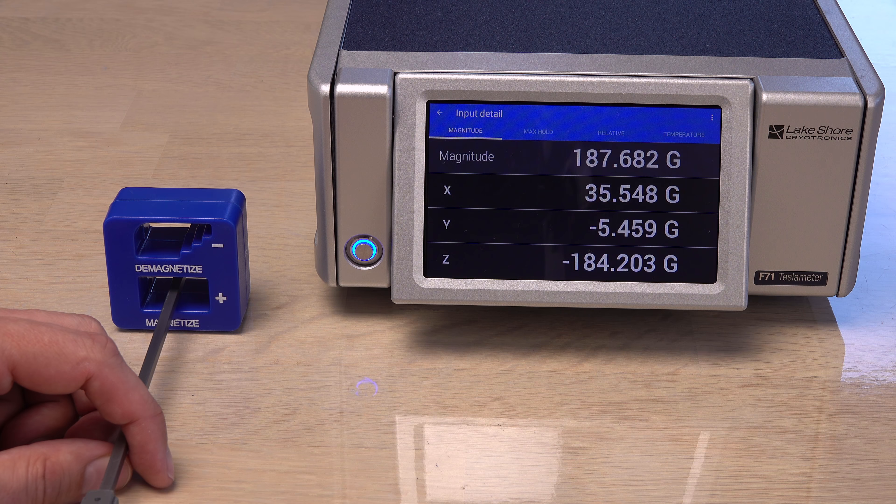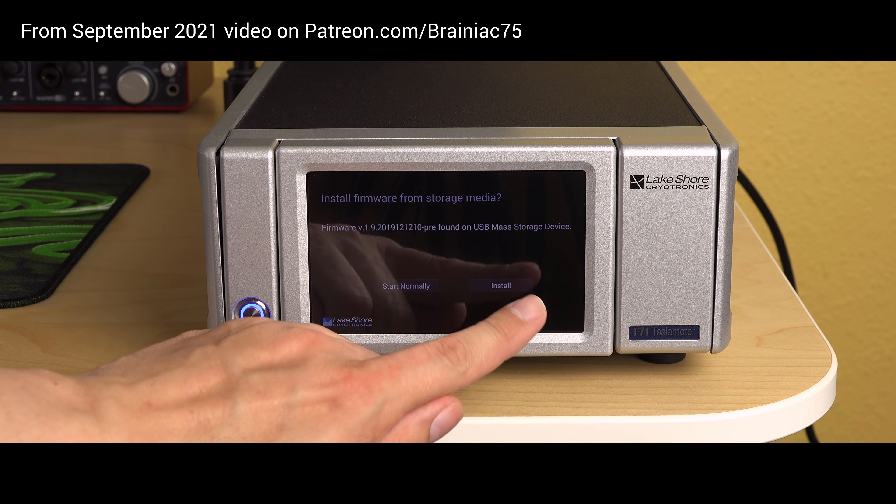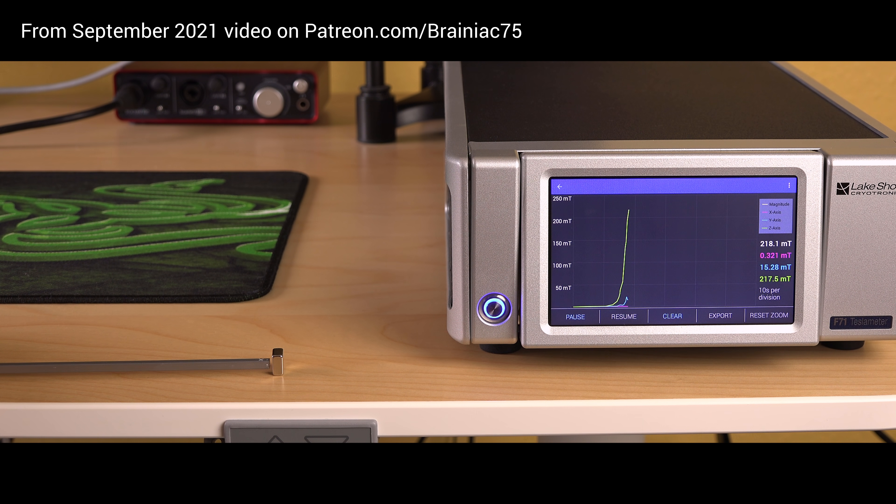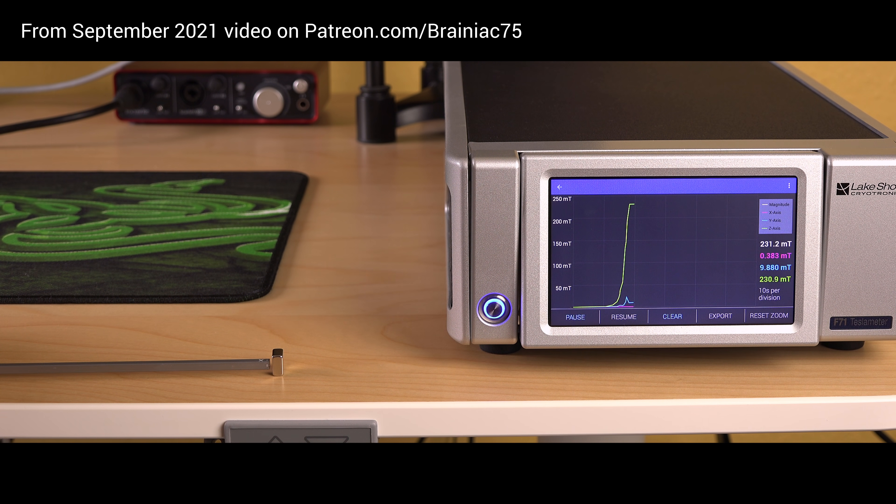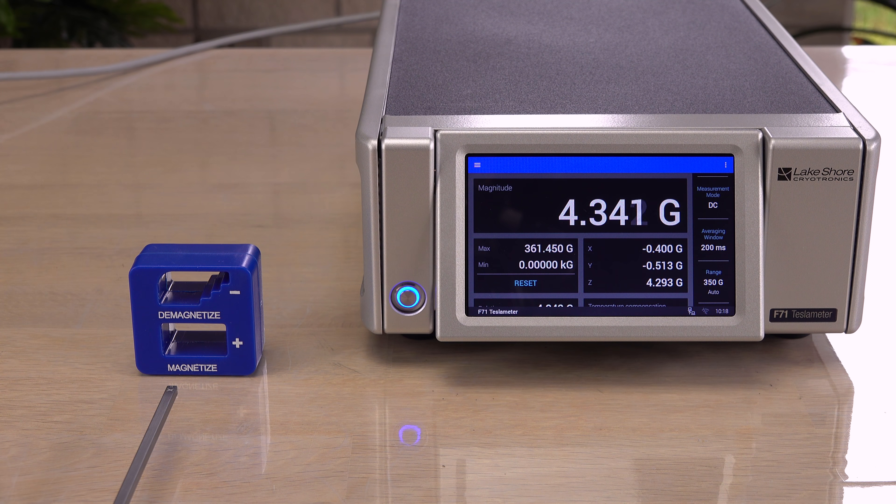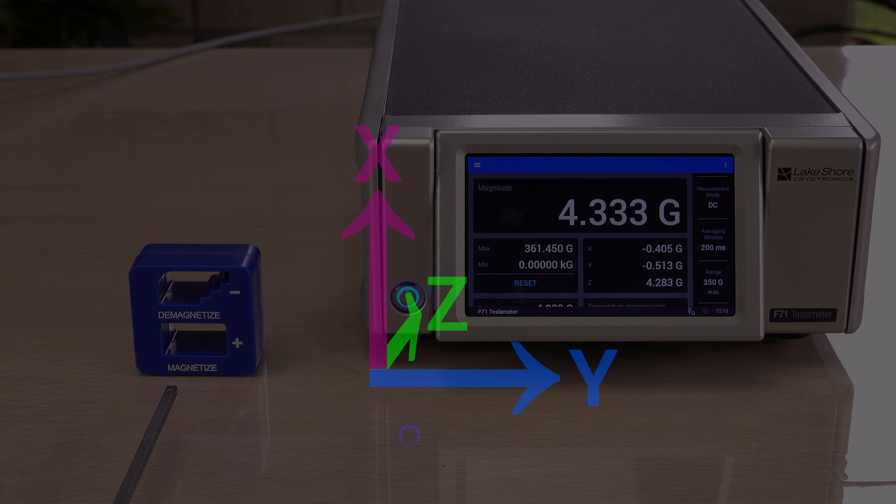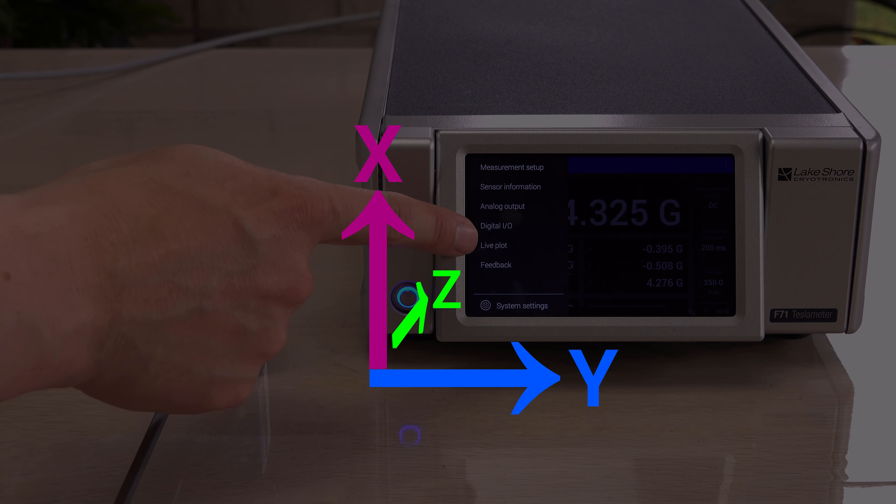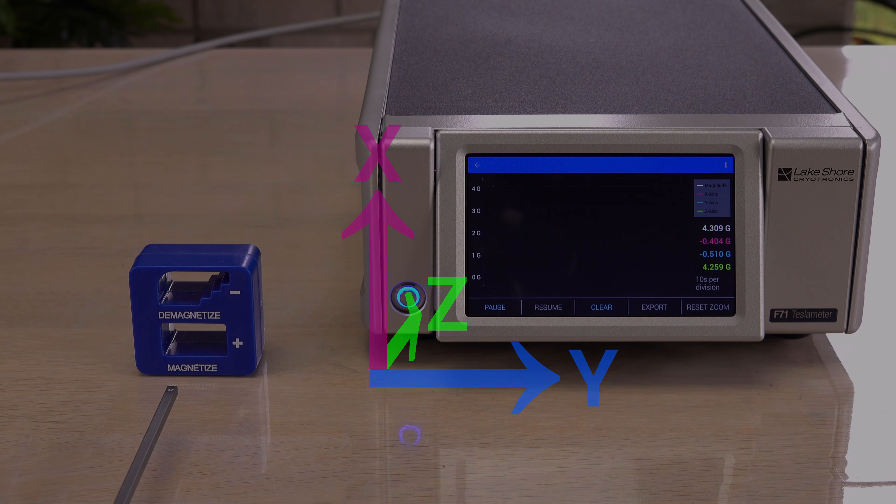I then remembered I have a beta firmware ready to install on the teslameter. The upgrade includes a graph feature which is perfect for visualizing this measurement. First you need to know the directions of the three axes. In the way I am holding the probe, the x-axis is up down, y-axis is left right, and z-axis is in and out of the screen.